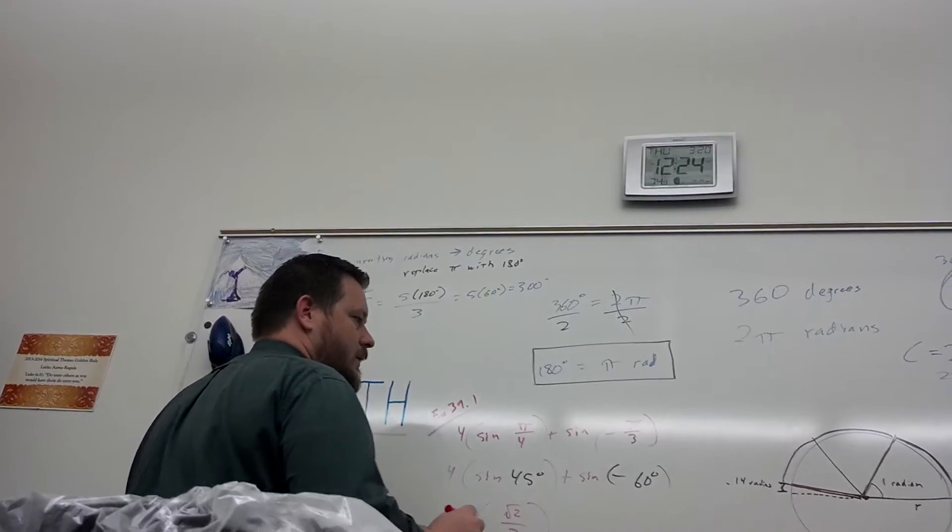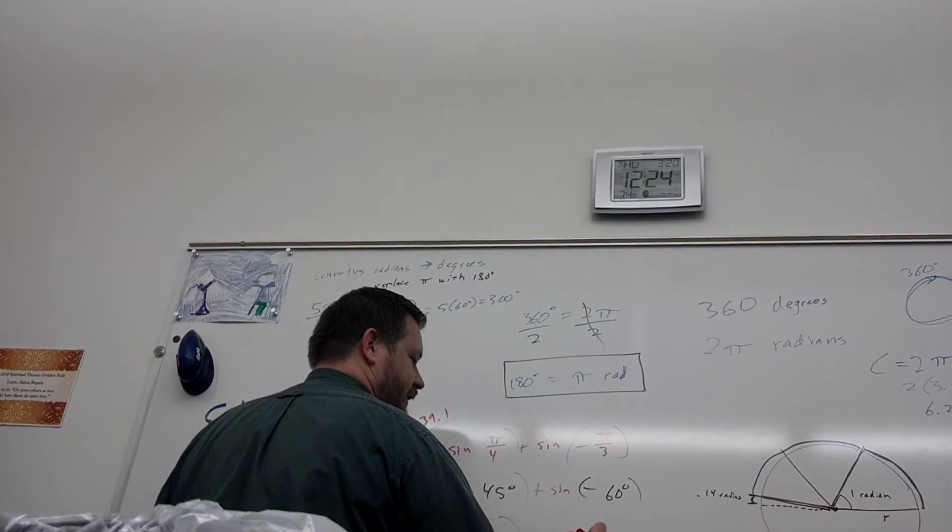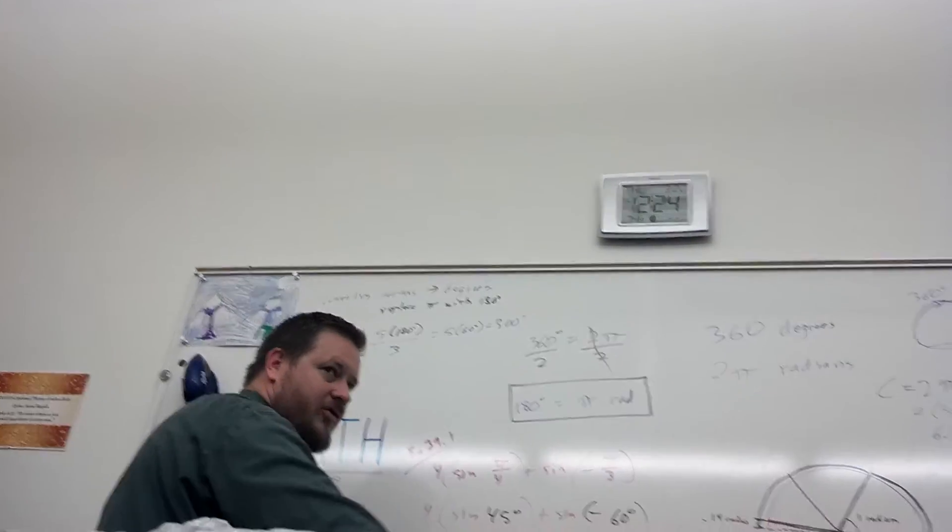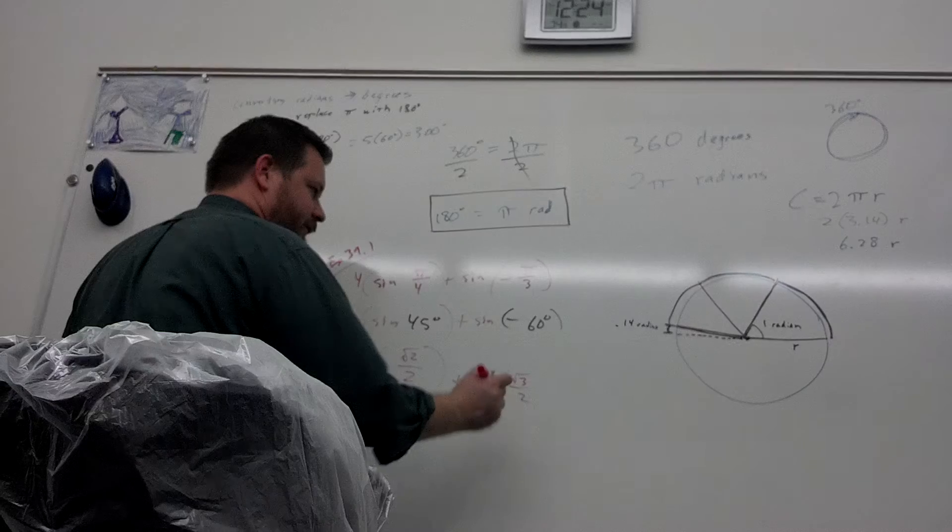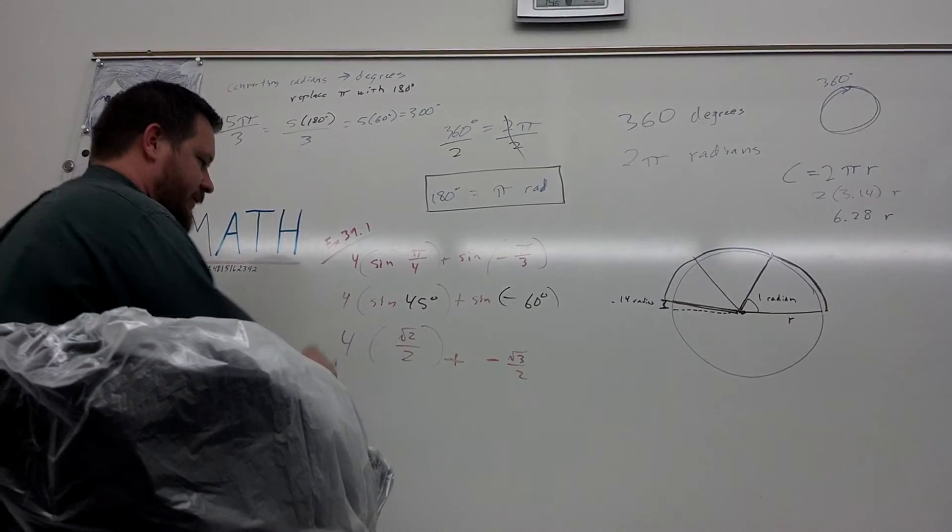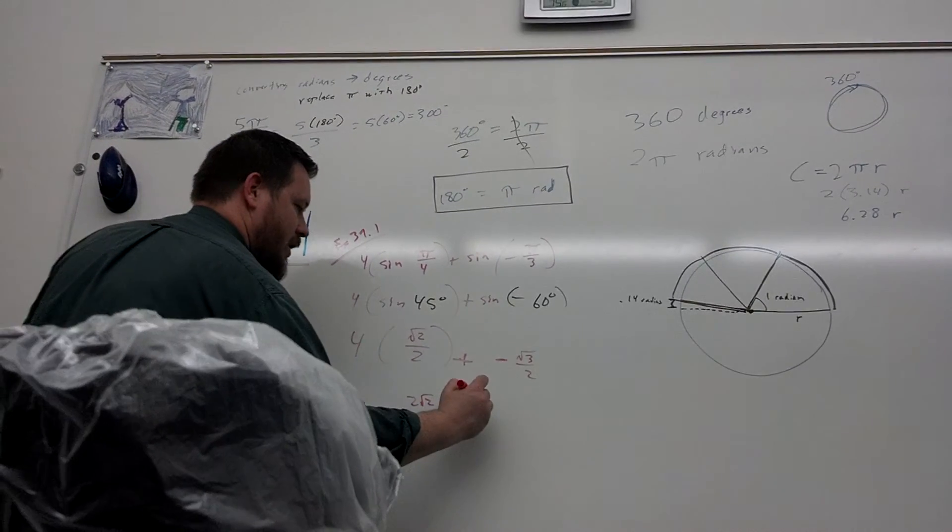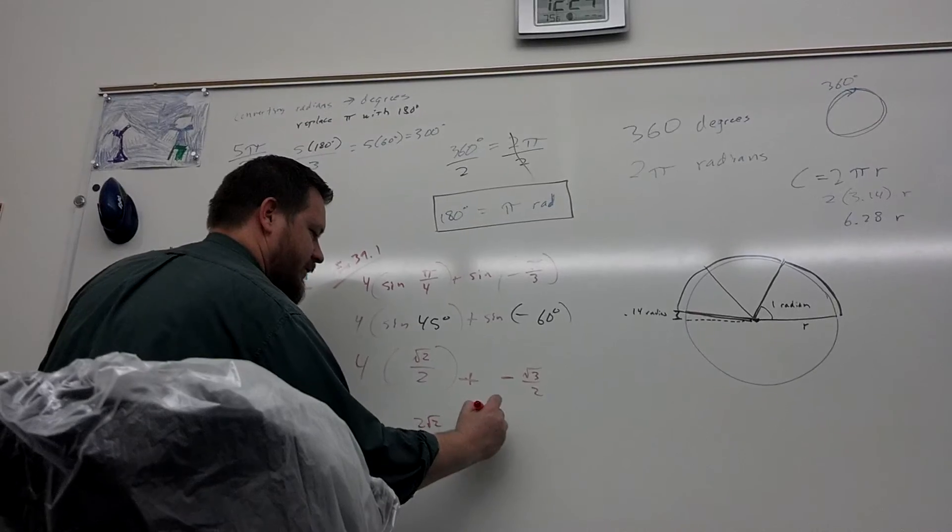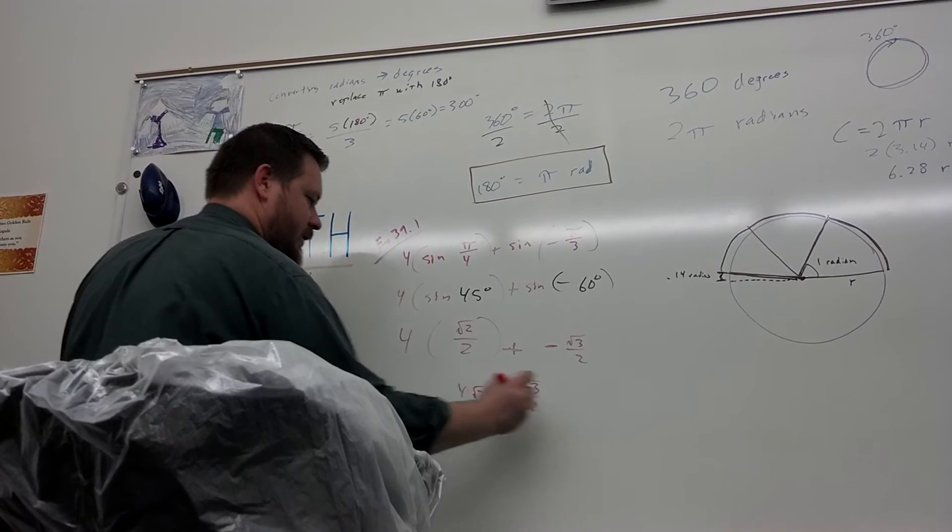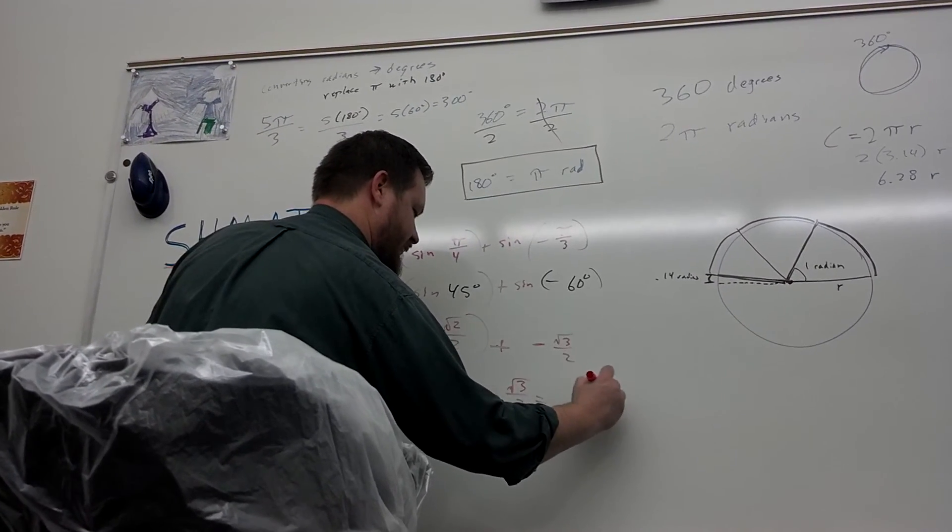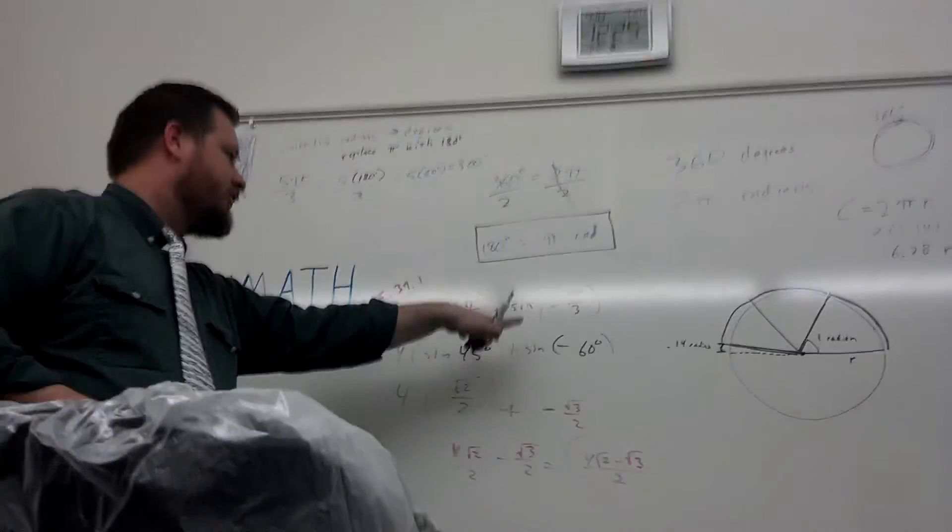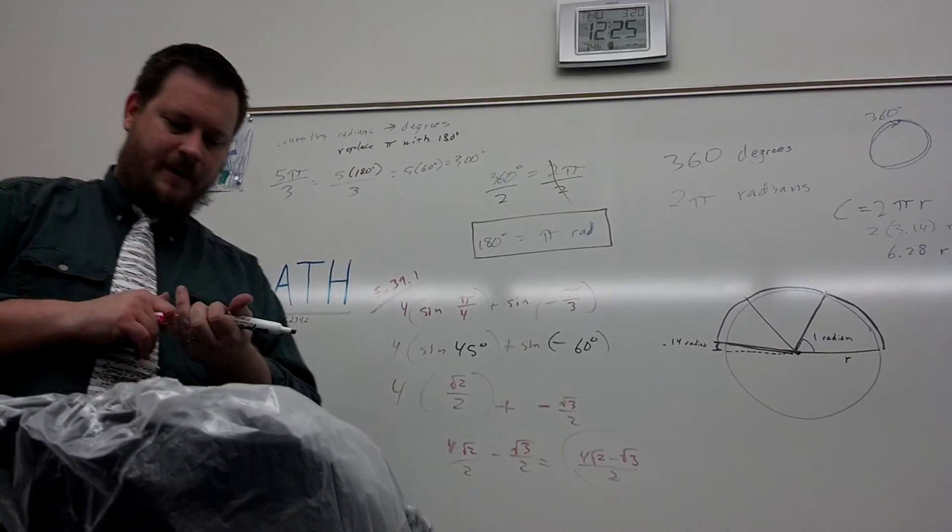Well, the sine of 60 degrees is... And you can get it from there. 4 over 2 cancels or reduces to 2 root 2. Plus... Well, plus a negative minus root 3 over 2. And... Actually, I'll probably just leave this like this. And I'm going to say 4 root 2 minus root 3 over 2. And at this point, once you convert from radians to degrees, it's exactly like problems you've already done. Okay, smash, goodbye. Have a question.